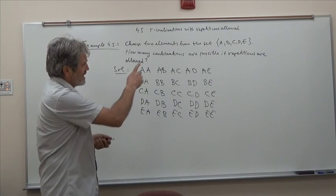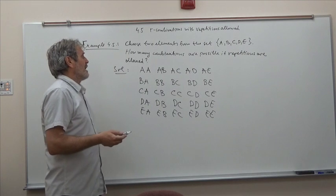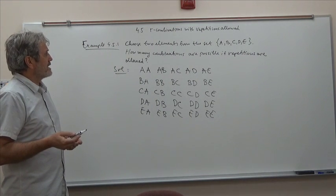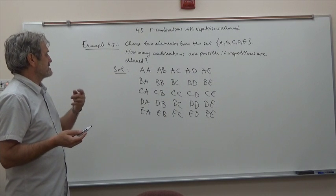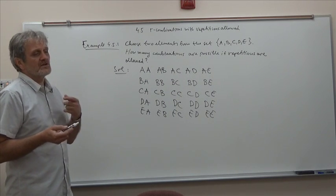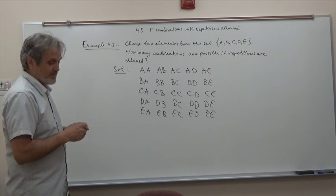This is a schema that's very easy to write down - it's 5 by 5. I start with A first and list all possible options for the second one, then do the same with B, same with C, same with D, and same with E. I'm allowing repetition from AA up to EE.